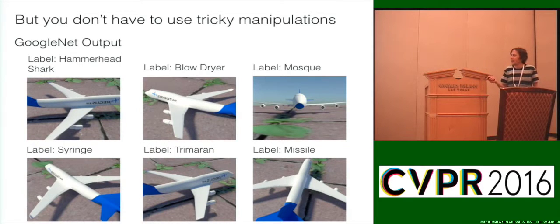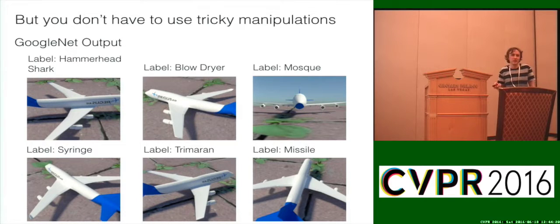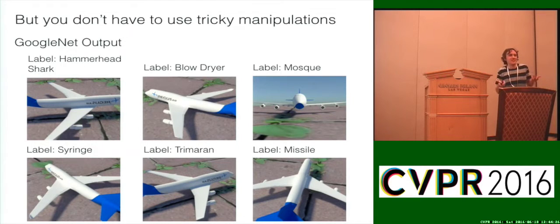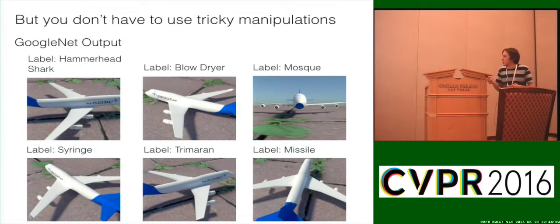Notice these mislabeled images: hammerhead shark — kind of plausible. Blow dryer — struggling to understand that. Mosque — really struggling to understand that mislabeling. Syringe, trimaran. A jet may be a missile technically, but that's not the label I would have assigned to this image.